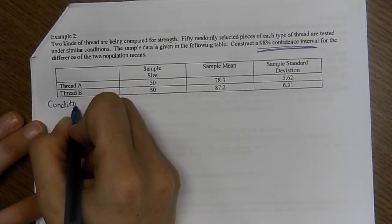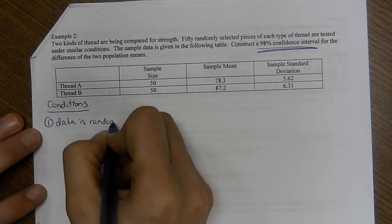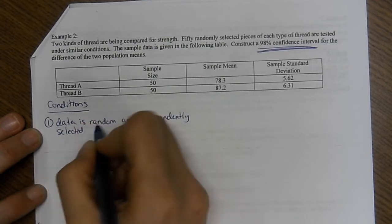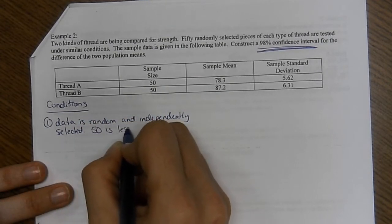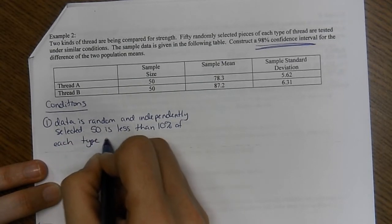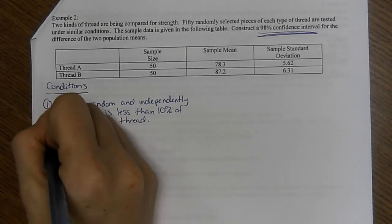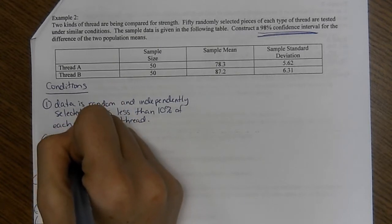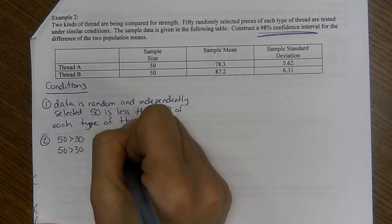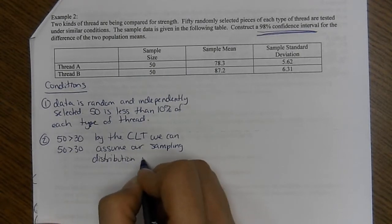So condition number one is the same as yesterday. Data is random and independently selected. 50 is less than 10% of each type of thread. Condition two, 50 is greater than 30 on both of these. So by the central limit theorem, we can assume our sampling distribution is approximately normal.